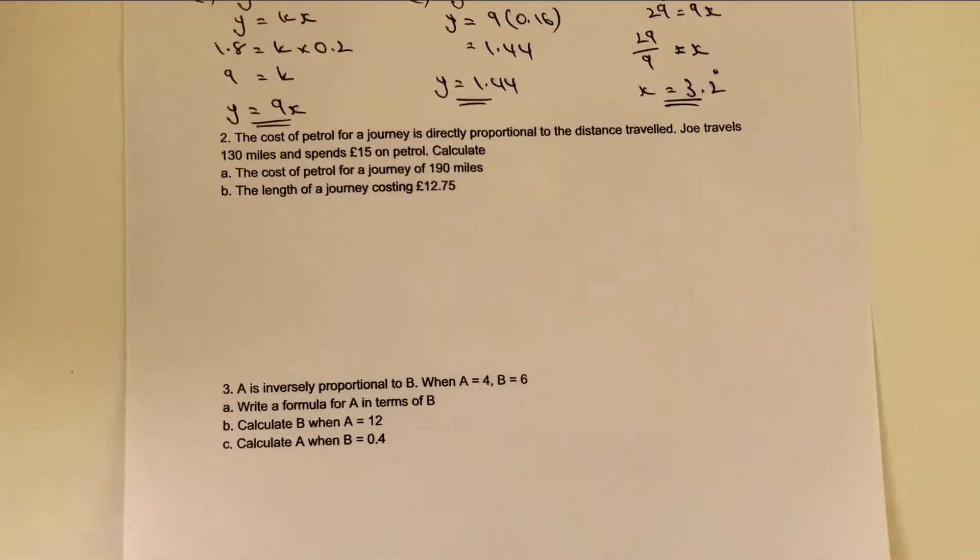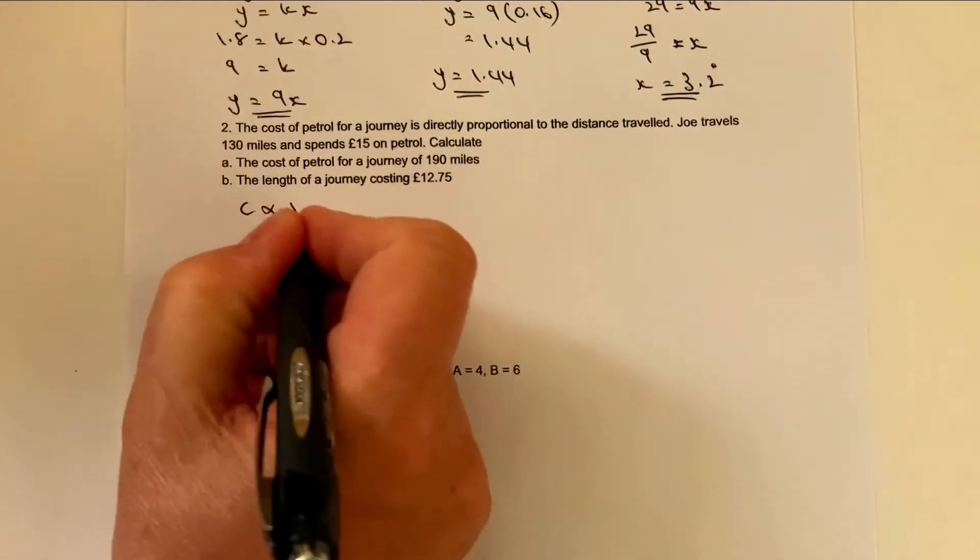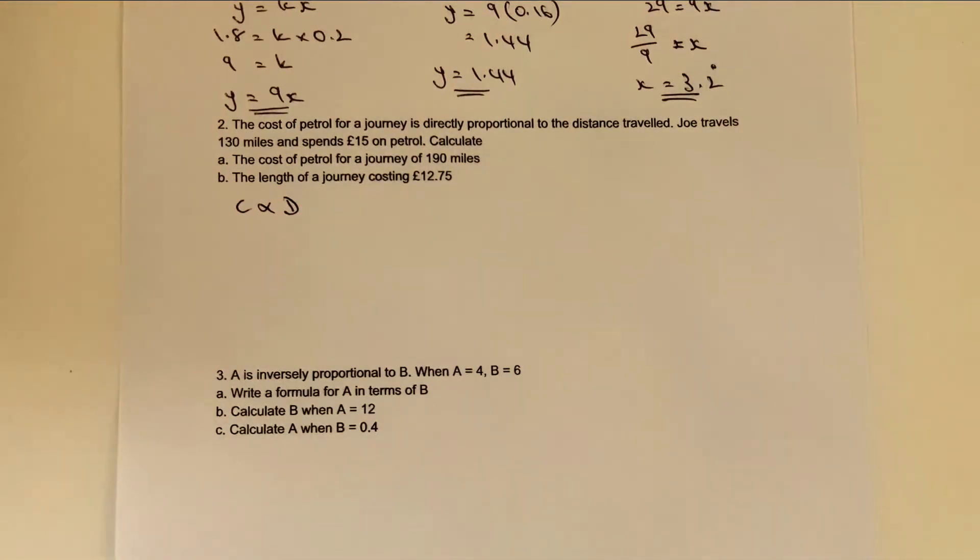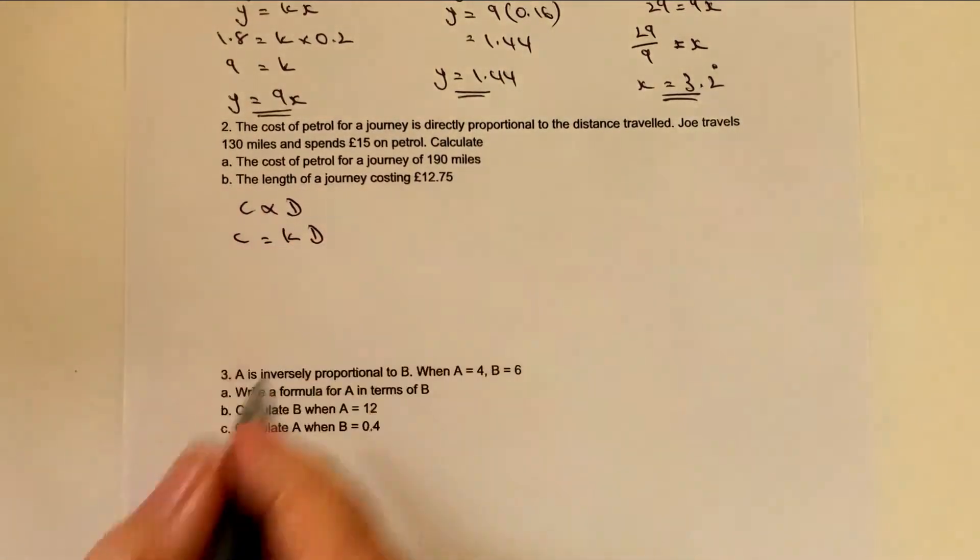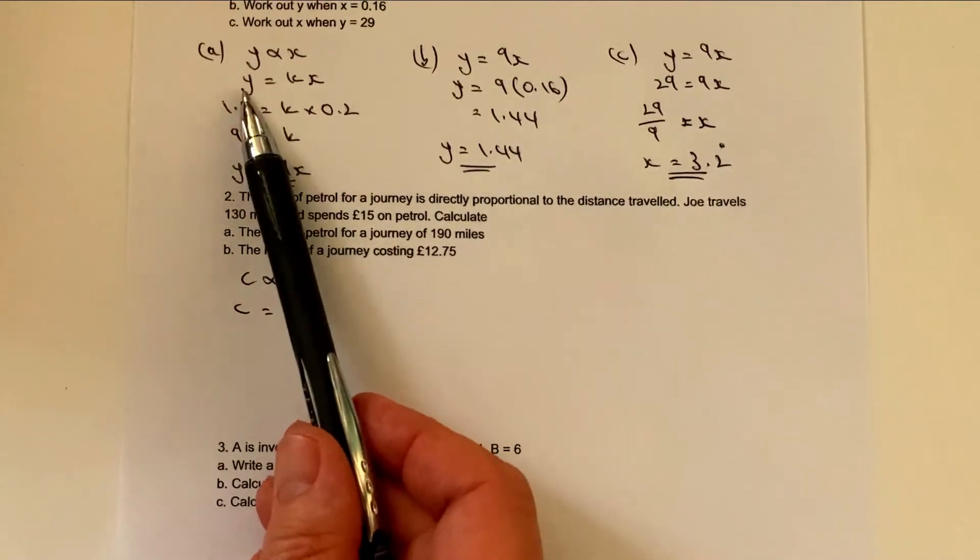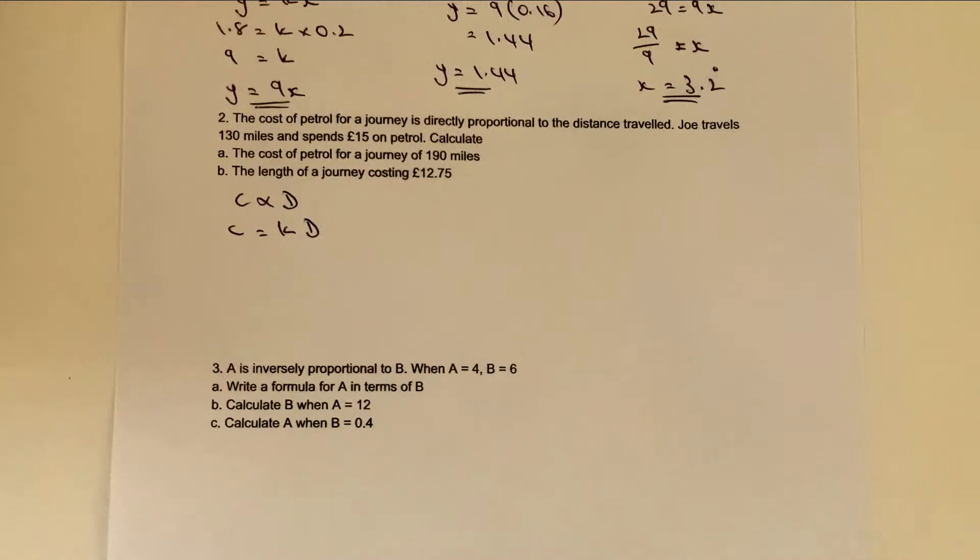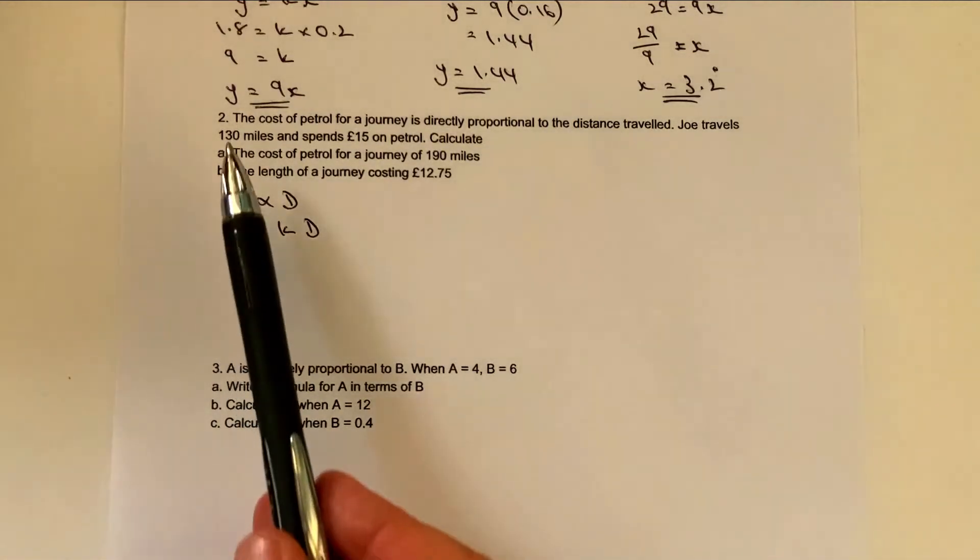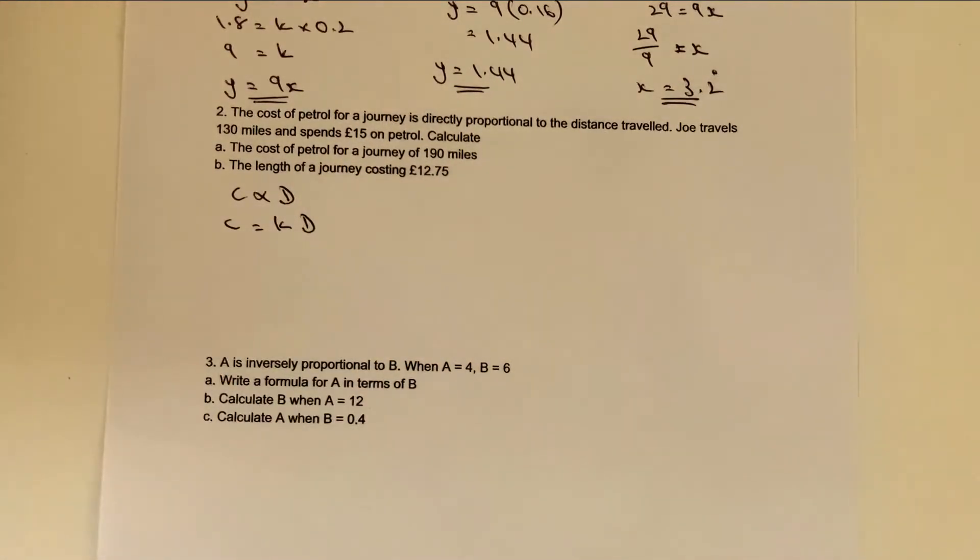I would say very typically these are calculator type questions. Let's move on to question number two. It says the cost of petrol for a journey is directly proportional to the distance traveled. So again, I'm going to write that down as a proportional relationship, which is cost is directly proportional to distance. But then I'm going to convert it into a formula. So cost equals k times distance.